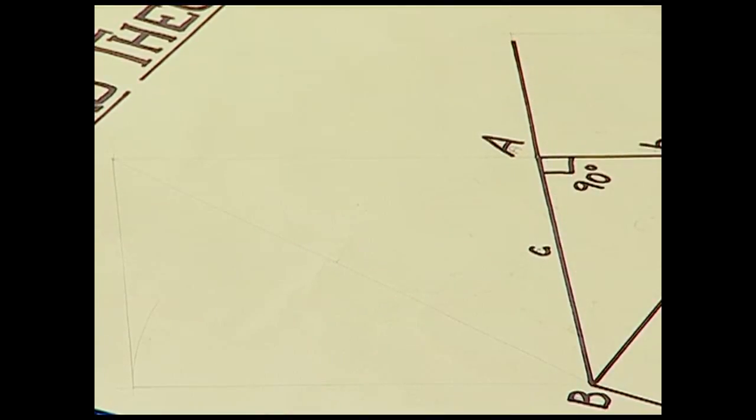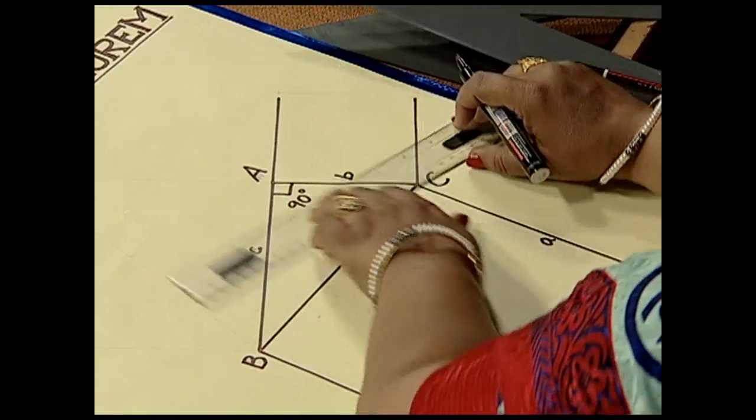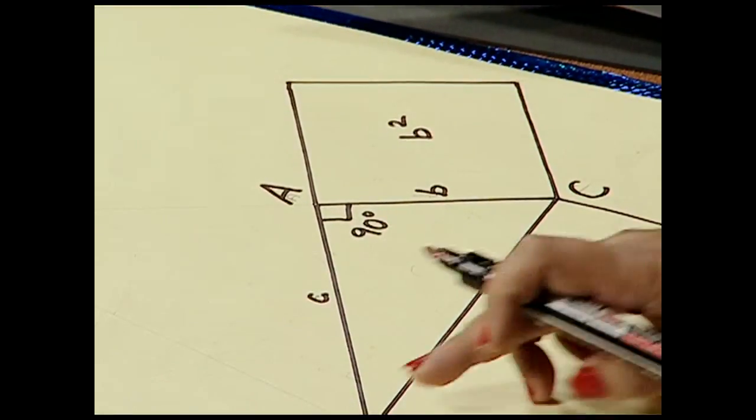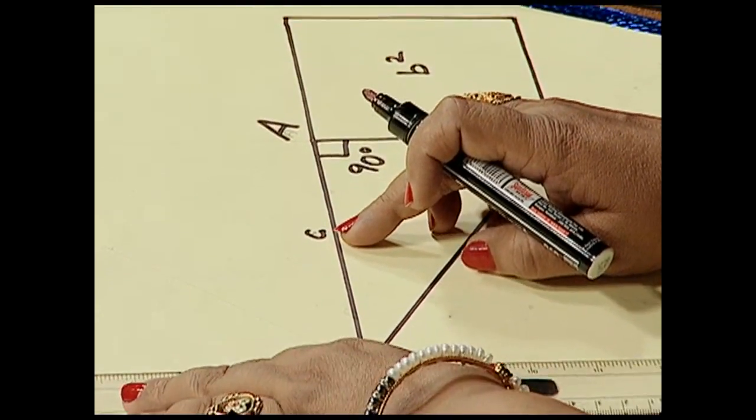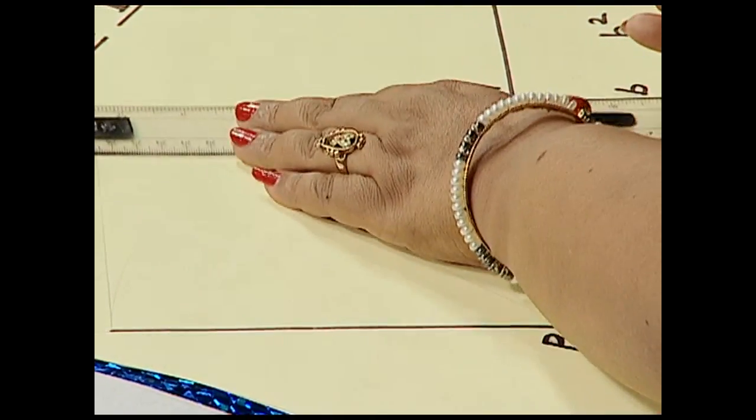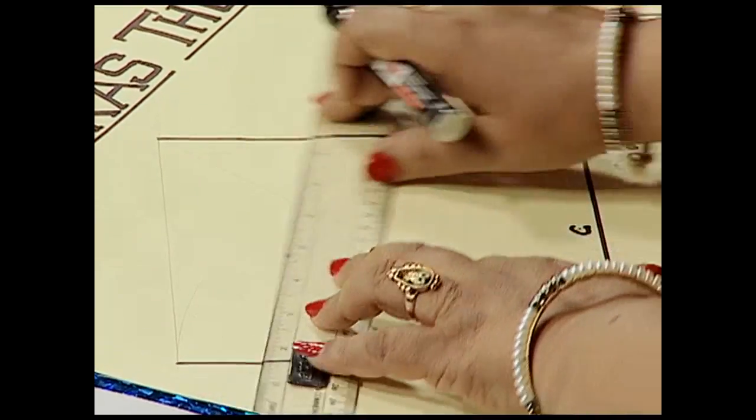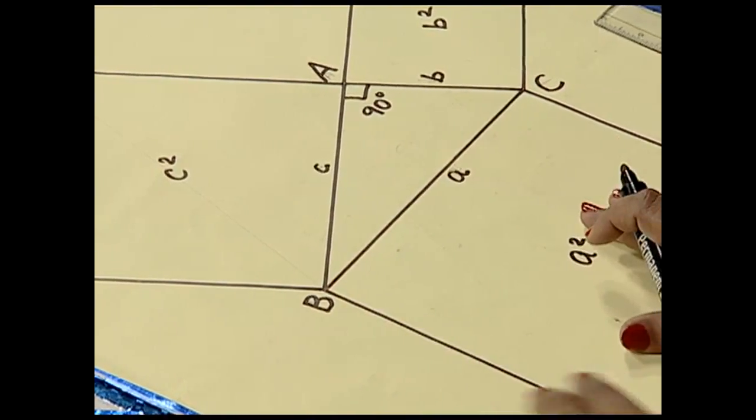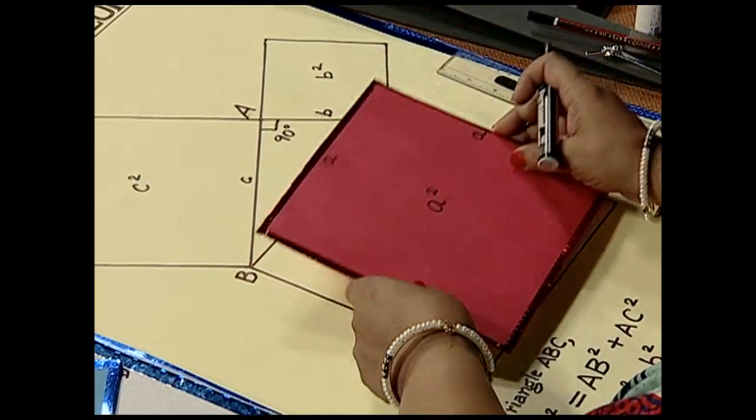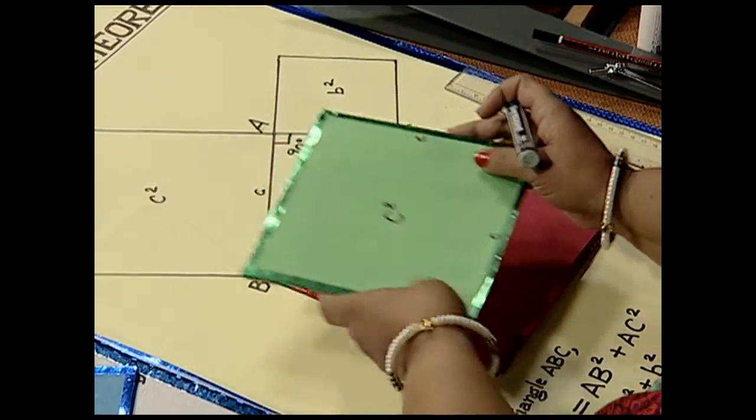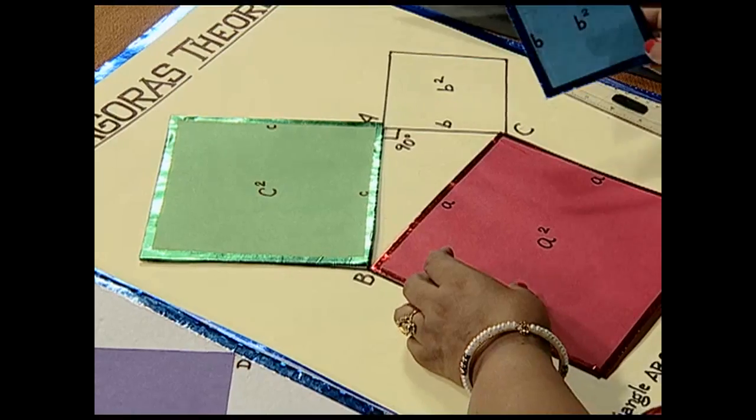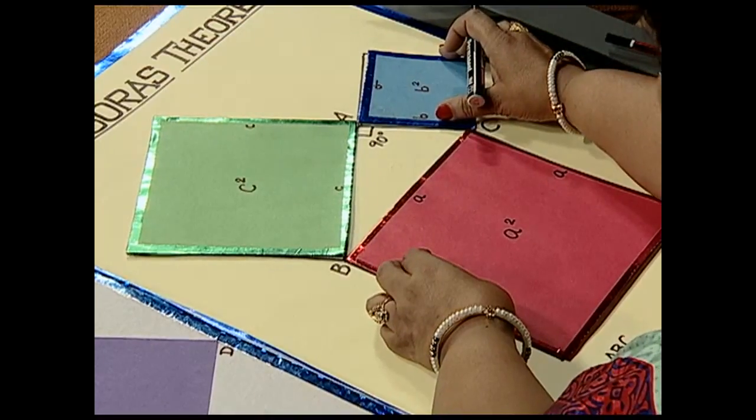On the sides along AC whose length is b, so what will be the area? It will be b². Same way, we have length c here and we need to construct a square of length c. This is a square c whose area is c². We also prepare cutouts - this is the square of area a², this cutout is of square having area c², and here is a square of length b and area b² which is placed along AC.